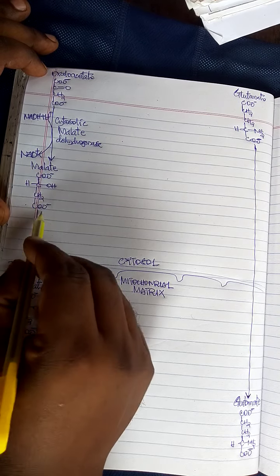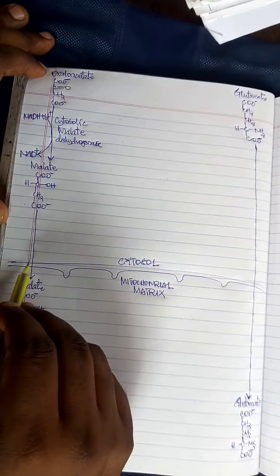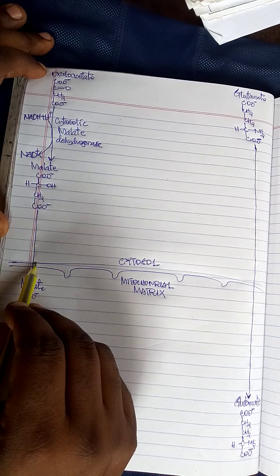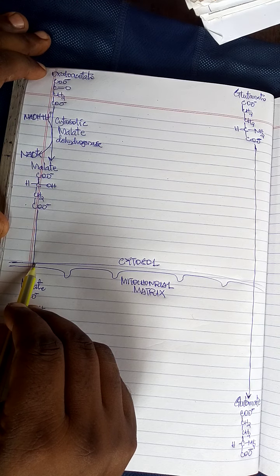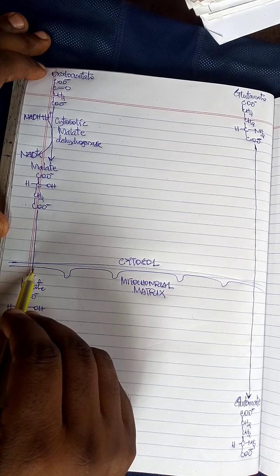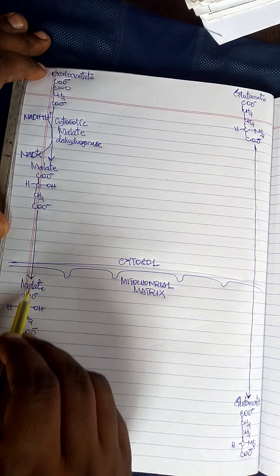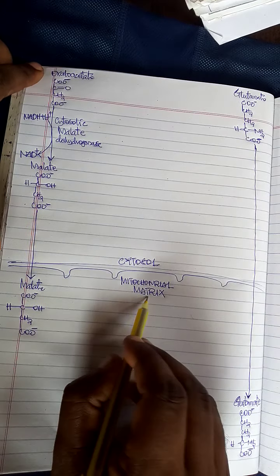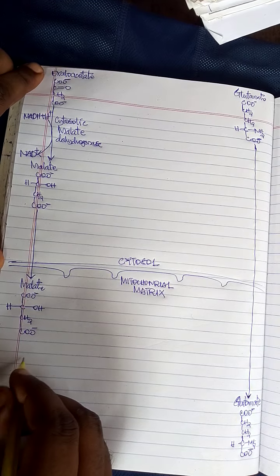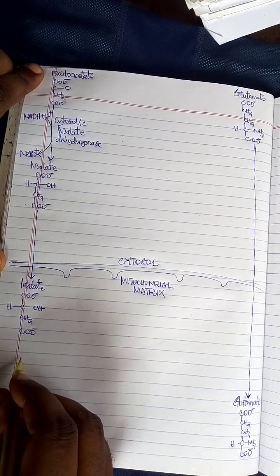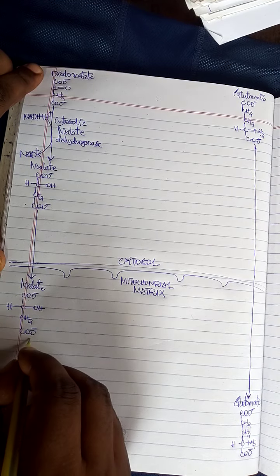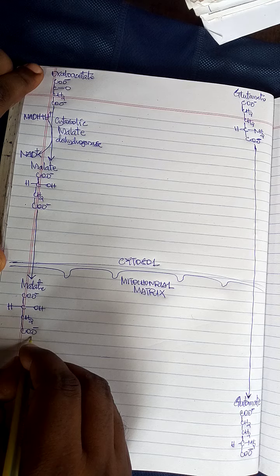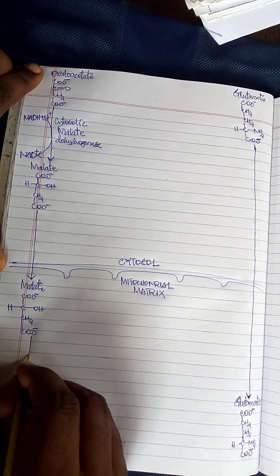Then malate is transferred first through the outer membrane of mitochondria, then through the inner membrane of mitochondria, and into the mitochondrial matrix.